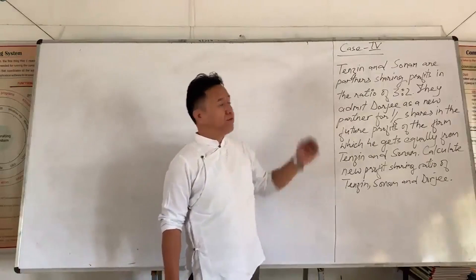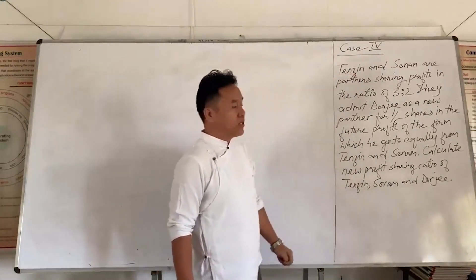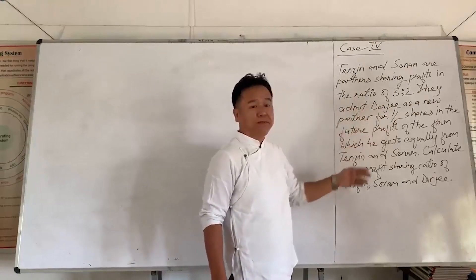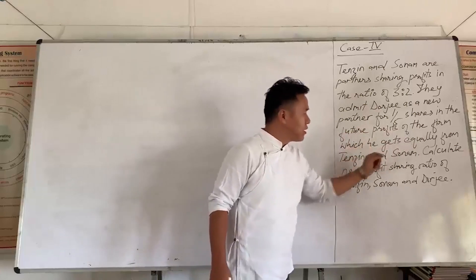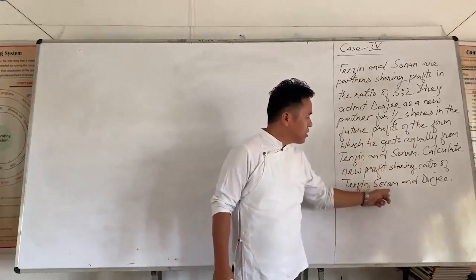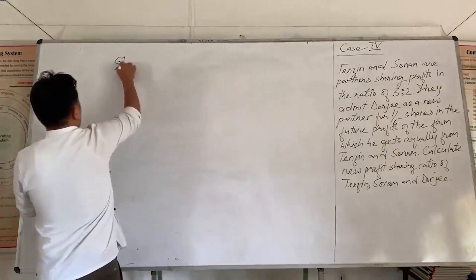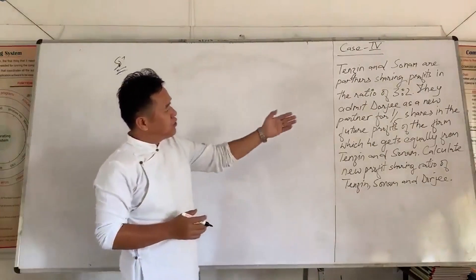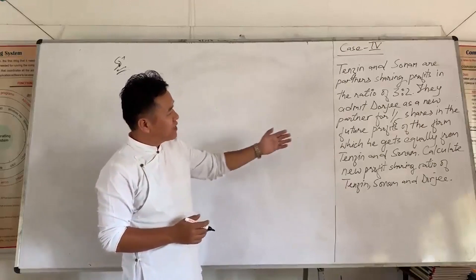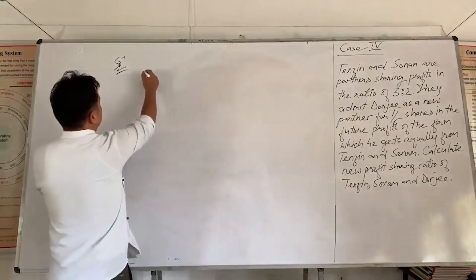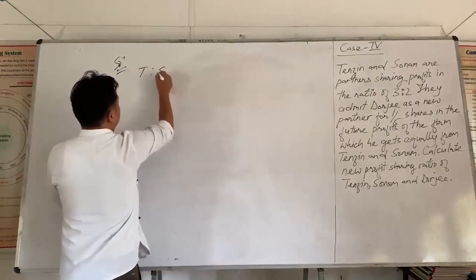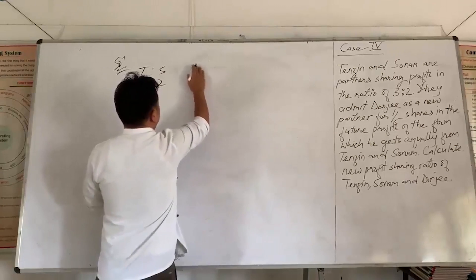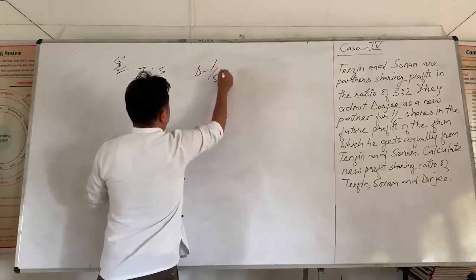Now we are going to discuss case number 4. Tenzin and Sonam are partners sharing profit in the ratio of 3 to 2. They admit Doji as a new partner with 1 by 5 share in the firm's profit.